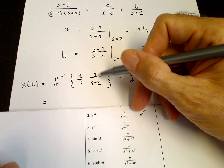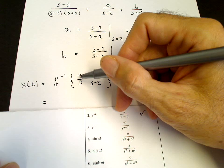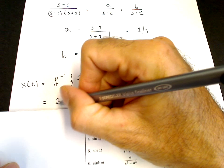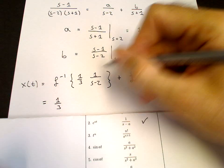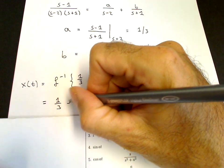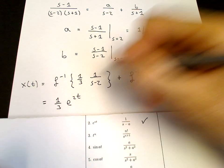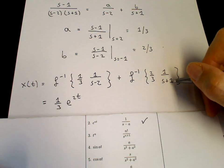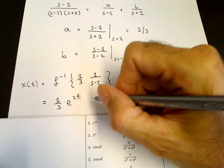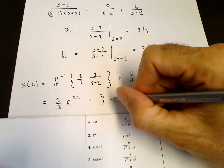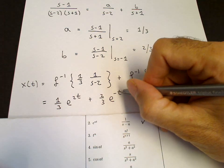So then this one, A here is 2, and the one-third we can pull out. So that's one-third e to the 2t. And this term, A equals minus 1, the two-thirds we can pull out, plus two-thirds e to the minus t. And we've completed then the Laplace transform method.